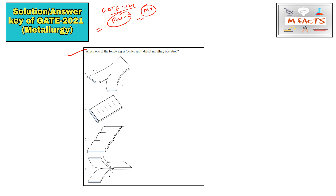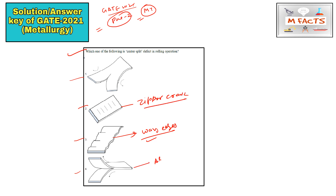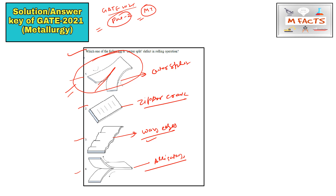The first question asks which one of the following is a center split defect in rolling. These are some defects of rolling. The first one is wavy edges — if you go through a detailed book on rolling you'll find these images directly. This is zipper crack, this is wavy edge, this is alligator ring. The remaining one is center split. This type of defect is known as center split, and this figure is the correct answer.